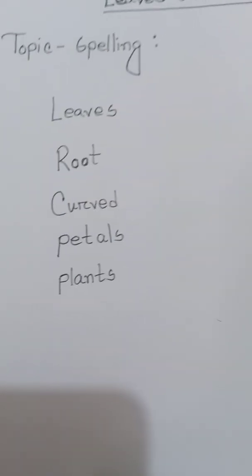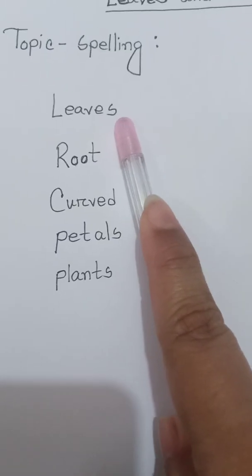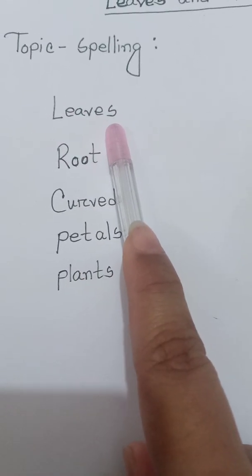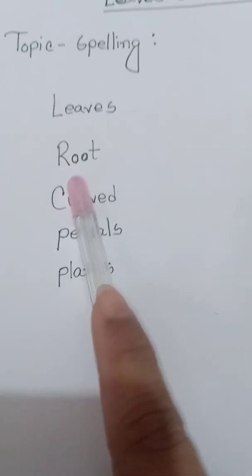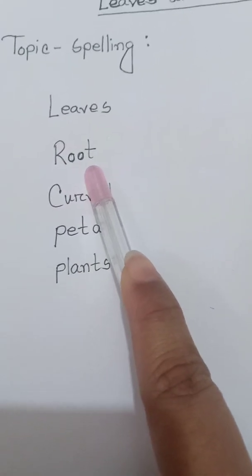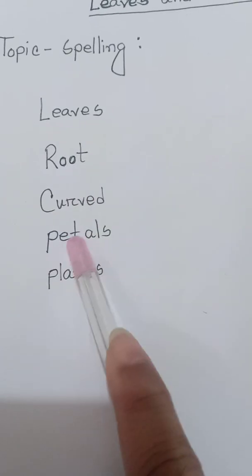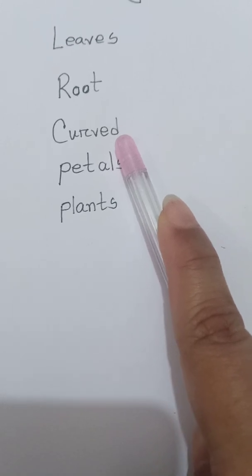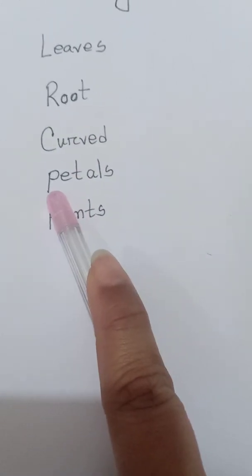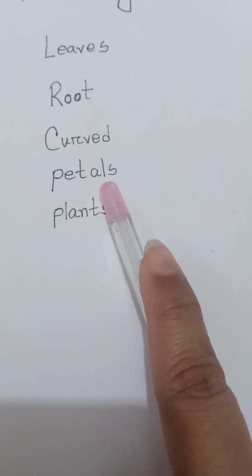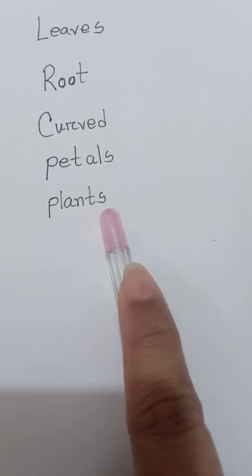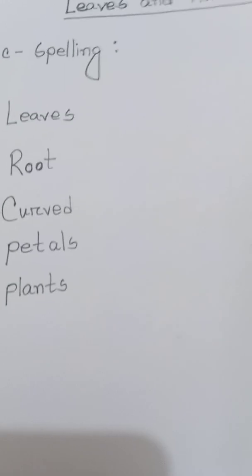First we have: leaves — L-E-A-V-E-S; root — R-O-O-T; curved — C-U-R-V-E-D; petals — P-E-T-A-L-S; plants — P-L-A-N-T-S.